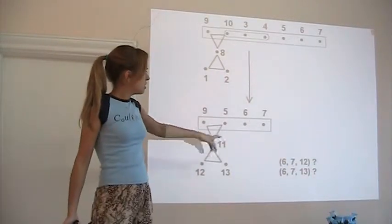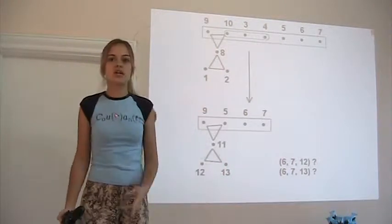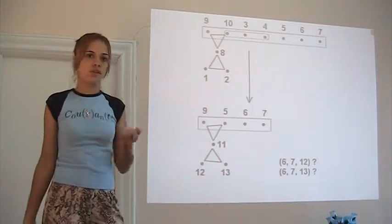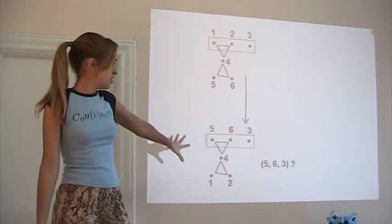So this case is essentially different from this one. Because here, maybe (6,7,12), (6,7,13) are edges and maybe they're not. But there is a chance that they could be. There is nothing that prevents it. And here it's impossible.